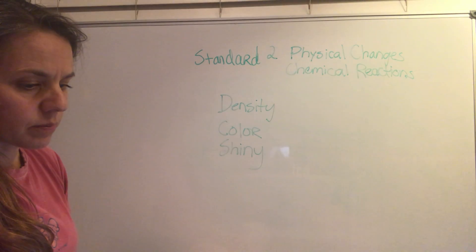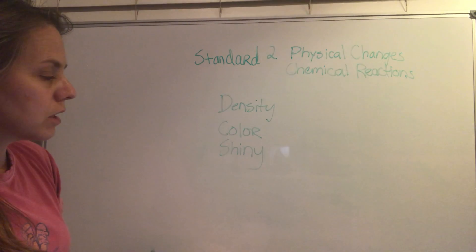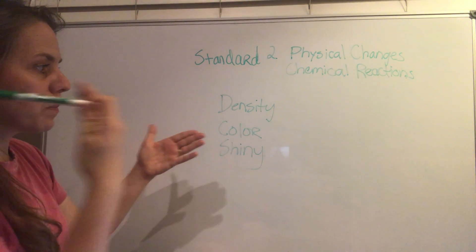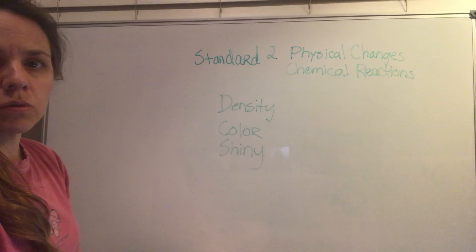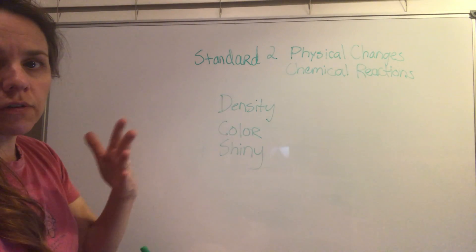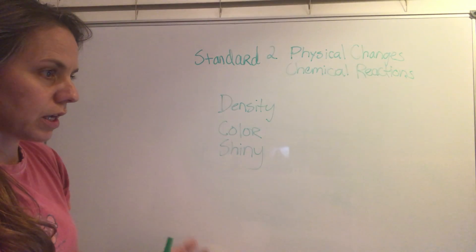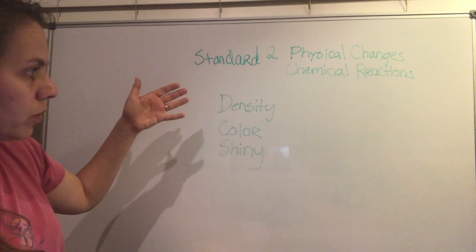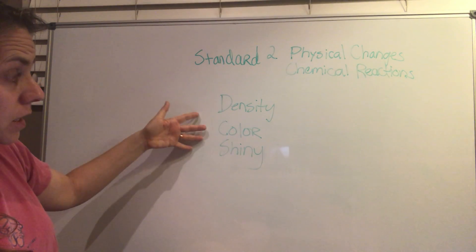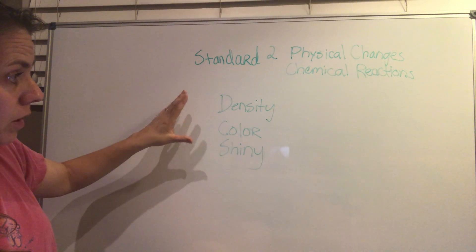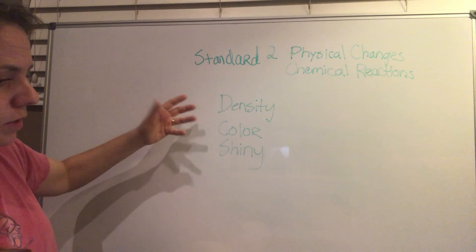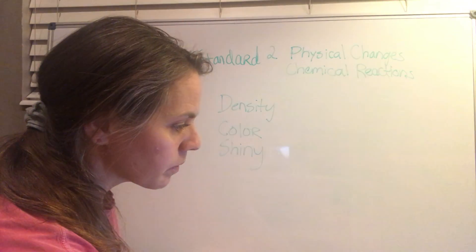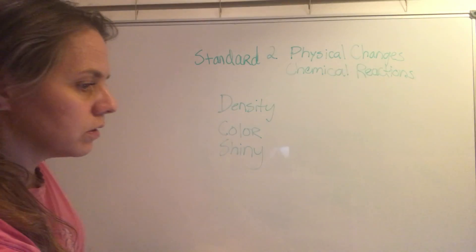Silver is a great element to use for mirrors because it provides the right property of reflection — light reflects off it, which enables us to see our images in mirrors. So these are other properties of elements and substances in general. You guys remember I played that shiny song for you.